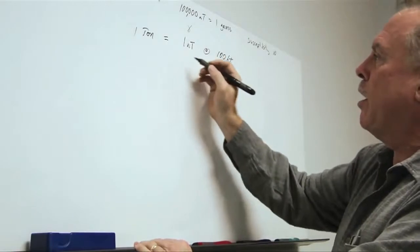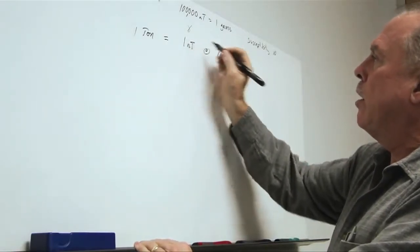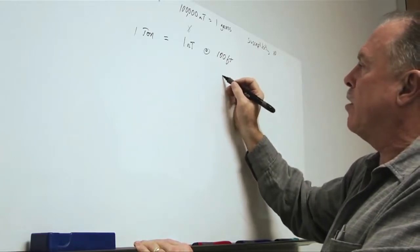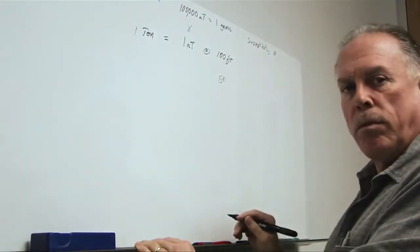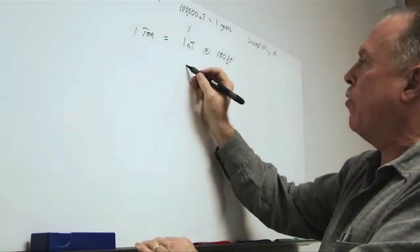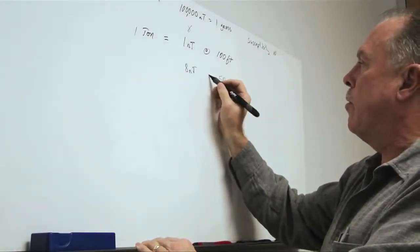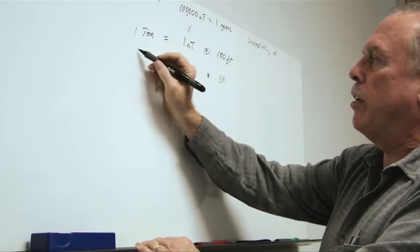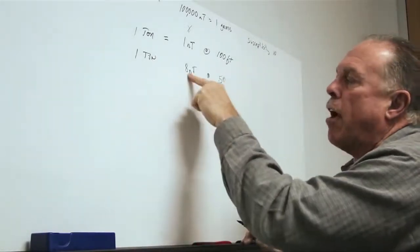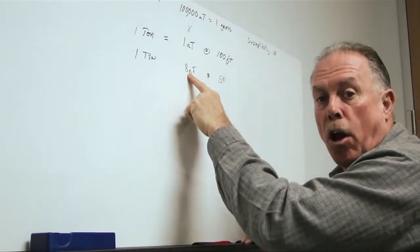So, if we have one ton equals one nanotesla at 100 feet, another way of writing this is if we went to 50 feet, we would have eight times larger field. Eight nanotesla is one ton. So, as we cut the distance in half, we get a larger anomaly.